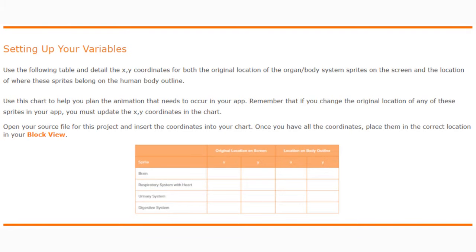Today we're going to continue with Project 1.8, Build a Body, and we're going to focus on how to set up our variables. We're going to be using a table to detail the XY coordinates for both the original location of the organ body system sprites on the screen and the location of where these sprites belong on the human body outline. We'll use this chart to help us plan the animation that needs to occur in our app.